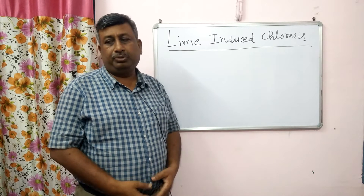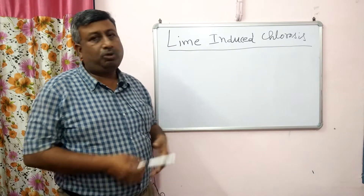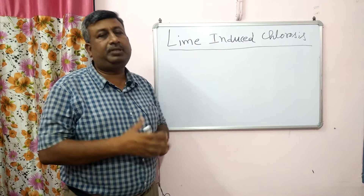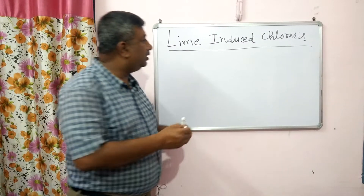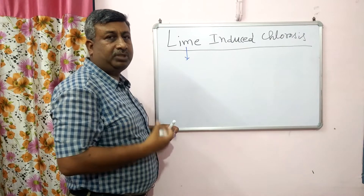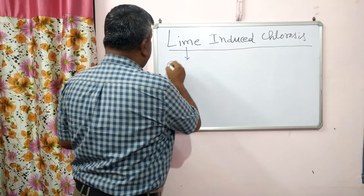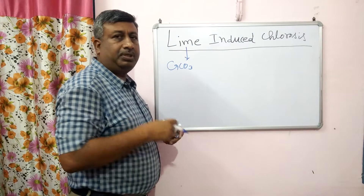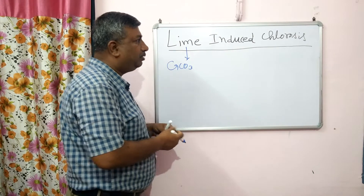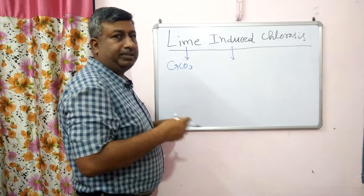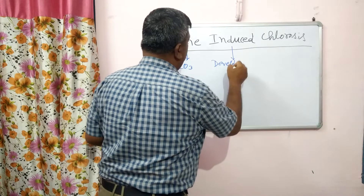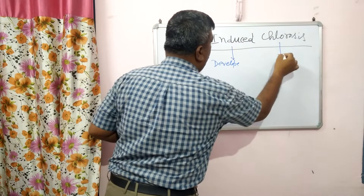What is lime-induced chlorosis? This is a very important topic and it is related with iron deficiency. If we look into the words: 'lime' means the material related with calcium — maybe calcium oxide or calcium carbonate. In general, we say lime is calcium carbonate. 'Induced' means to create or develop something that is not present. 'Chlorosis' means loss of chlorophyll.